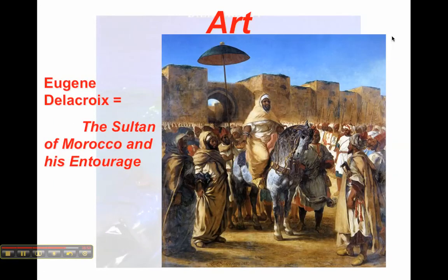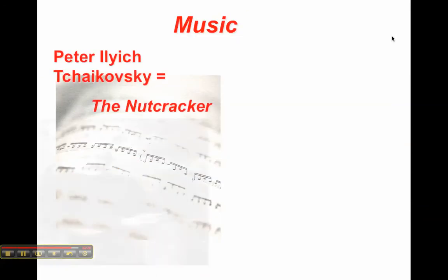Looking at art, one of the most famous romantic artists is Eugene Delacroix. If you look at this painting, The Sultan of Morocco and His Entourage, something that took place far away over in North Africa — just looking at the styles of people compared to the buttoned-up and severe Victorian look, this would definitely appeal to people's emotions as they looked at it.